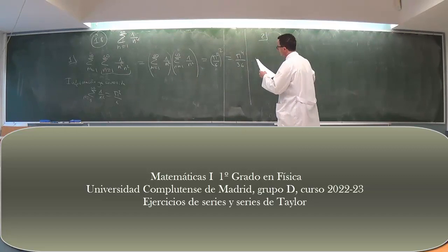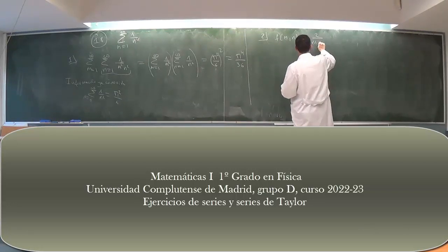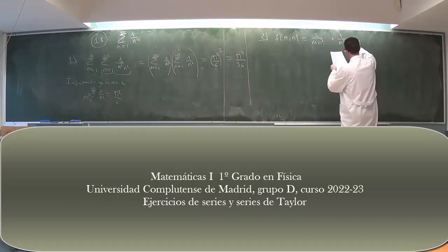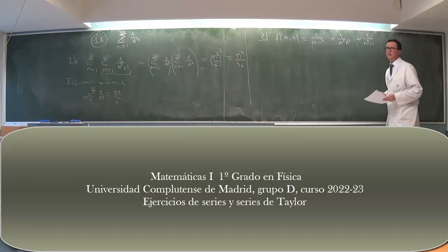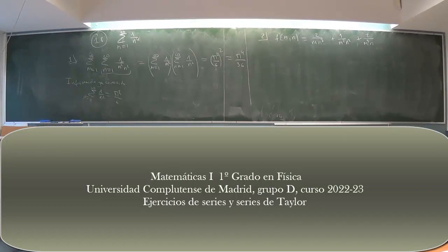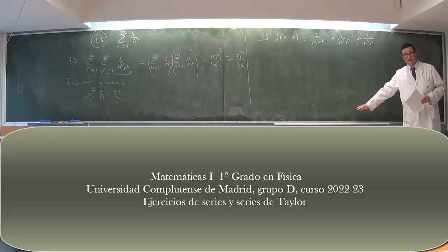Segundo trozo. Hay que considerar la función de dos variables F(m,n) = 2/(m·n³) + 1/(m²·n²) + 2/(m³·n). No se os va a pedir que se os ocurra esto en el examen; es una identidad que da un matemático famoso. Pero una vez dada, tenéis que ser capaces de operar con ella sin excusas.